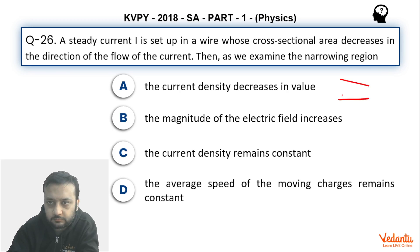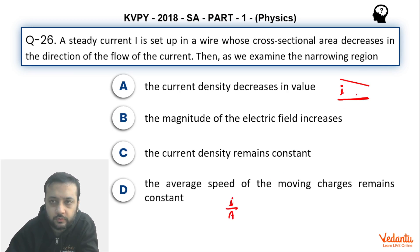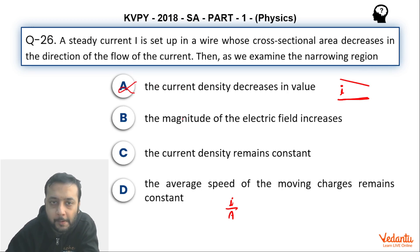Let me draw the situation here. Option A says current density decreases in value. We know that current density is current per unit area, i.e., i divided by A. So if area is decreasing, current density will increase, not decrease. So option A is wrong.